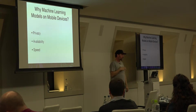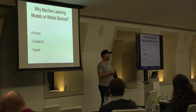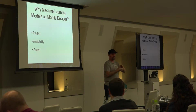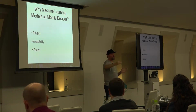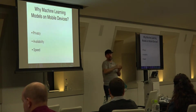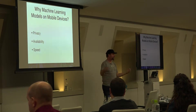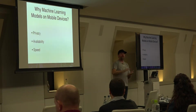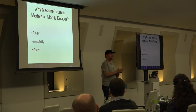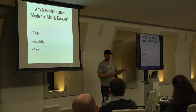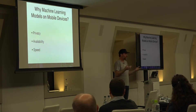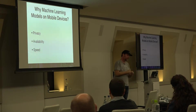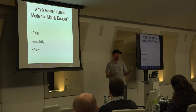A fourth point is that you can scale on the mobile devices themselves. Instead of scaling your server farm, you just scale on the mobile phone itself. Those are the four main reasons why you should run machine learning models on a mobile device.